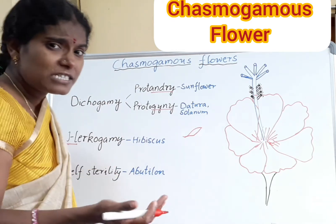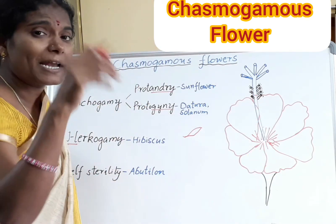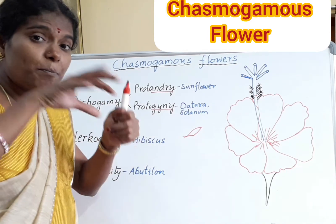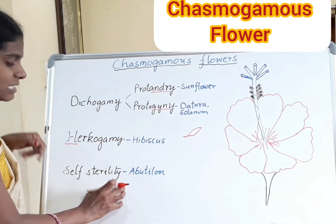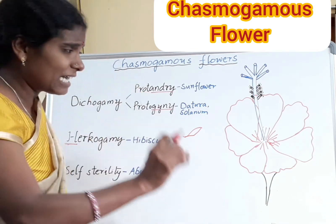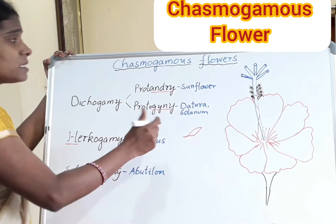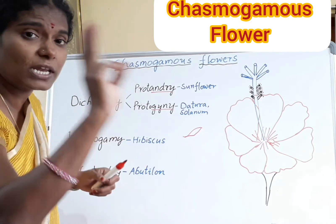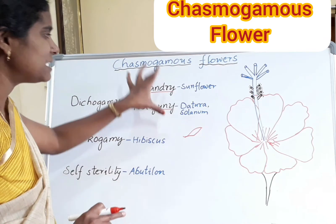The third strategy is Self-Sterility. In self-sterility, the flower prevents the growth of the pollen tube, thereby stopping self-pollination. Example: Abutilon. So, to summarize: chasmogamous flowers use three strategies to avoid self-pollination — Dichogamy, Herkogamy, and Self-Sterility — along with their types and examples. Thank you, students.